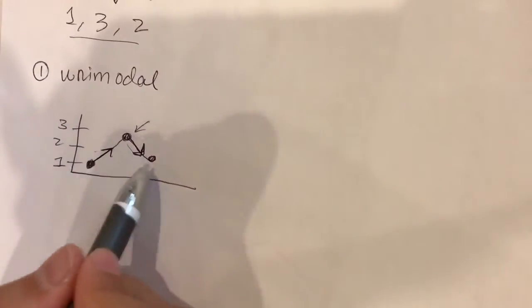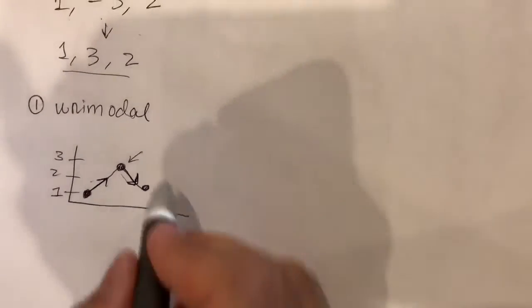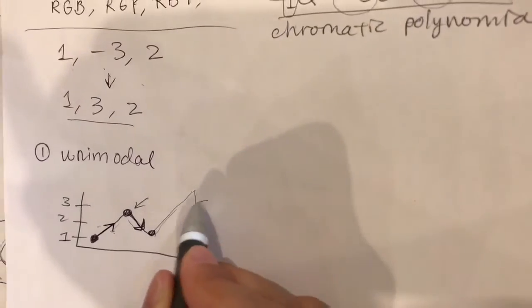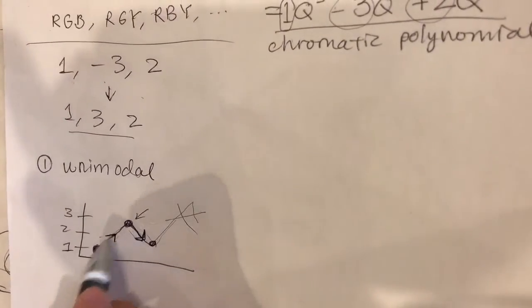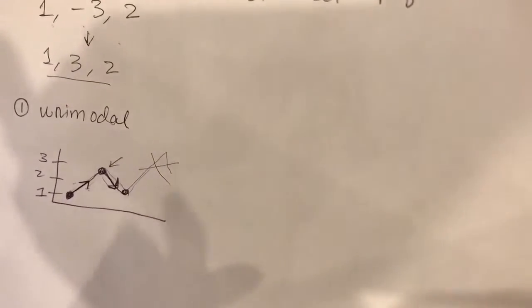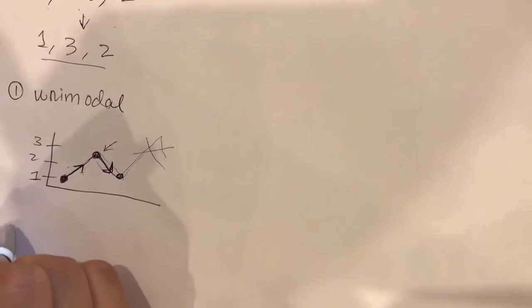So that's what unimodal means. If we put it together, it looks like a mountain. So it won't peak again, it won't do this sort of thing. That would not be unimodal. So only one peak. Before the peak it's always increasing. After the peak it's always decreasing.